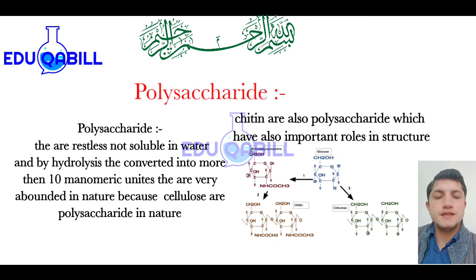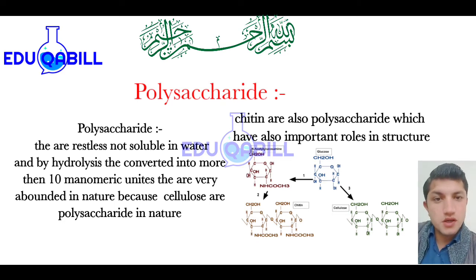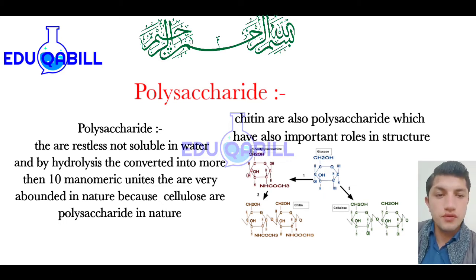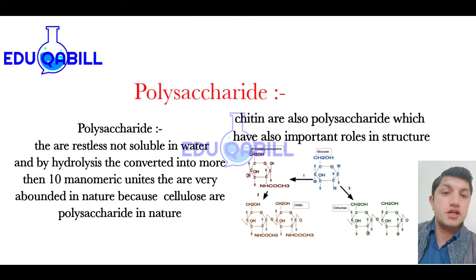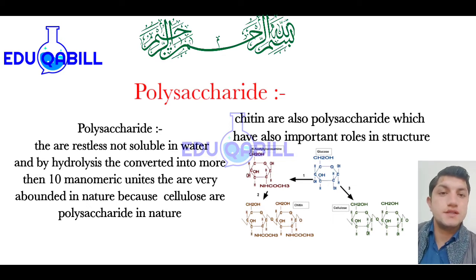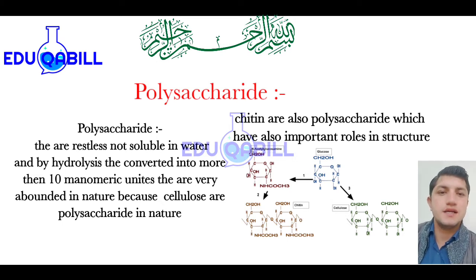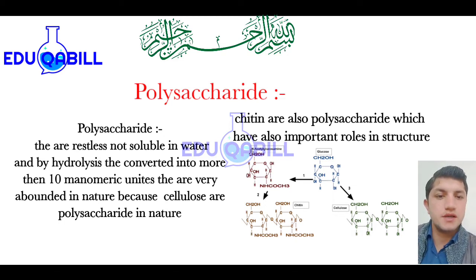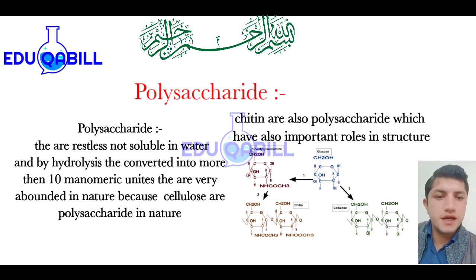The third important class of carbohydrates is polysaccharide. Polysaccharides are tasteless and non-soluble in water, because of the further decrease of hydroxyl groups. They are very abundant in nature because cellulose is a very important class of polysaccharide — every green plant, from the stem of young plants to old plants, contains cellulose. Therefore, they are very abundant in nature.